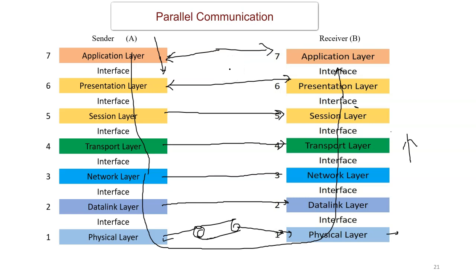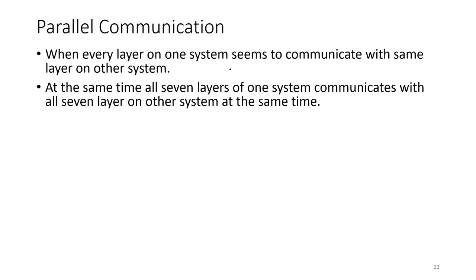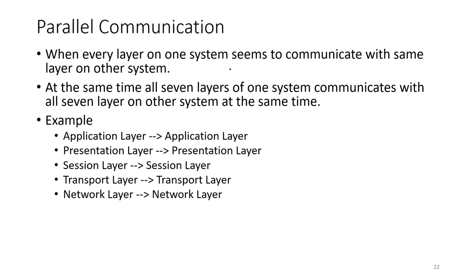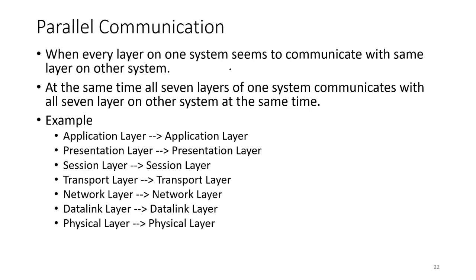Parallel communication means there is peer-to-peer communication for more than one layer. Parallel communication is also referred to as horizontal communication — there is communication happening in a horizontal manner. All seven layers on one system communicate with all seven layers on the other system at the same time. For example: application layer communicates with application layer, presentation layer with presentation layer, session layer with session layer, transport layer with transport layer, network layer with network layer, data link layer with data link layer, and physical layer with physical layer.